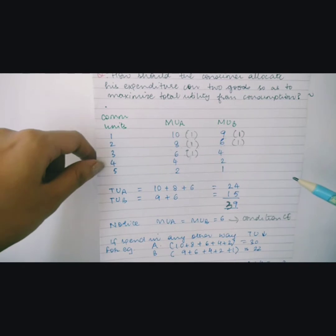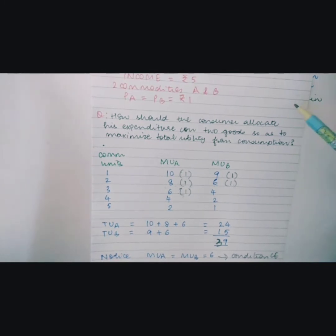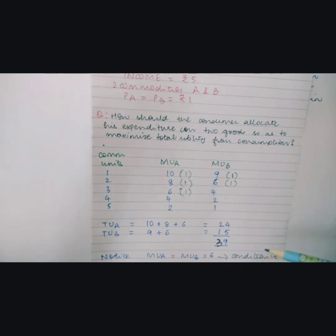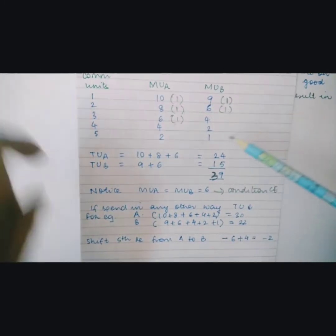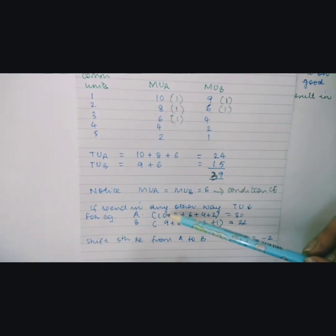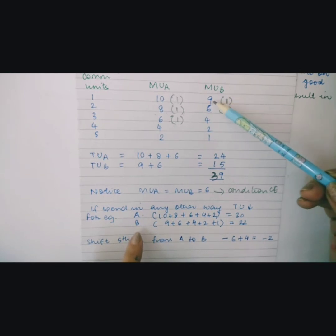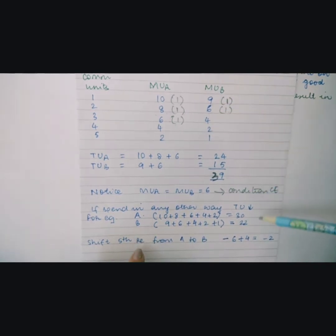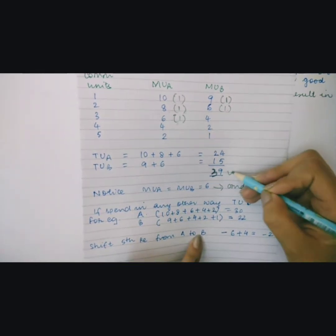If you spend your income in any other combination, the total utility you derive will fall. For example, if you spend all your money on commodity A, you get a total utility of 10 + 8 + 6 + 4 + 2 = 30. From B alone you would get 9 + 6 + 4 + 2 + 0 = 22. Notice that from the optimal consumption combination, you get a total utility of 39, which is higher.